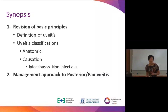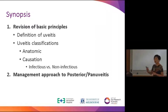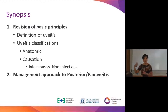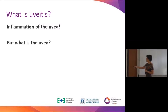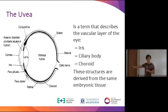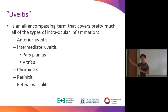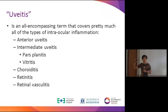So what is uveitis? When I was a medical student and even as a trainee ophthalmologist, I had a lot of trouble getting my head around it. 'Itis' means inflammation — arthritis is inflammation in the joint, so uveitis is inflammation in the uvea. The uvea is the vascular coat on the inside of the eyeball, going from the iris all the way back to the choroid. Therefore, uveitis refers to inflammation inside the eyeball, encompassing anterior uveitis, iritis, pars planitis, choroiditis, and retinitis.